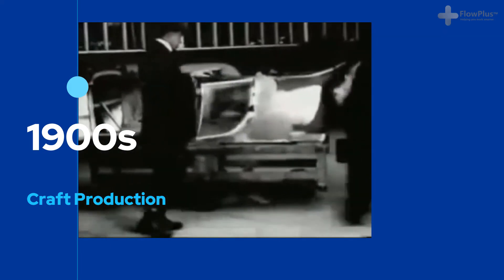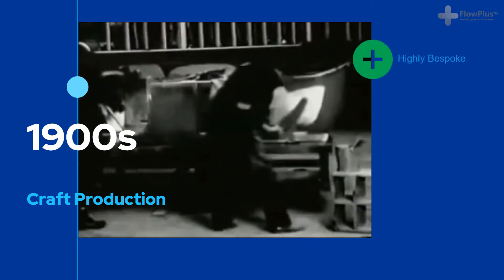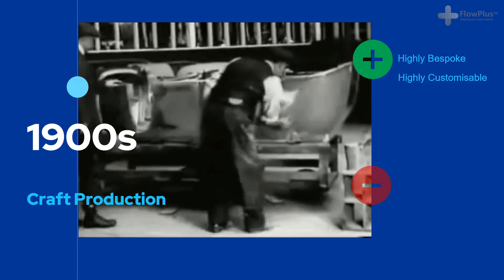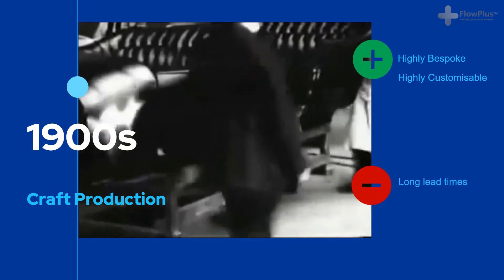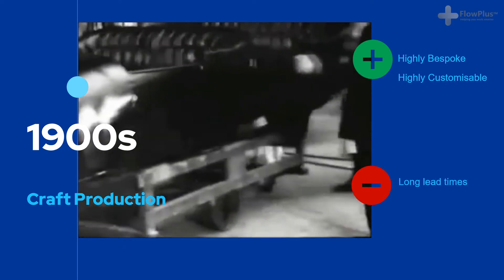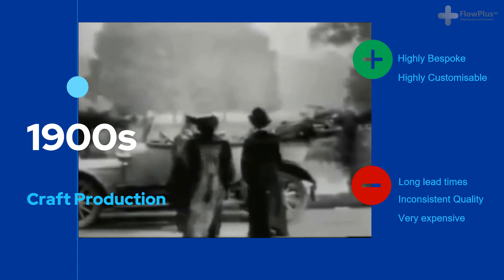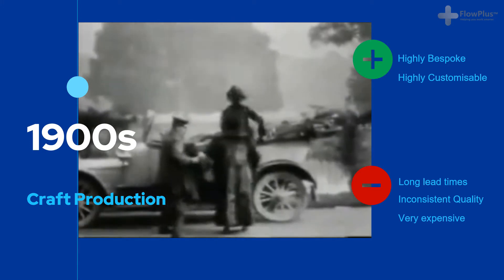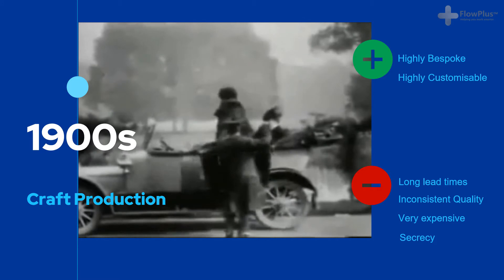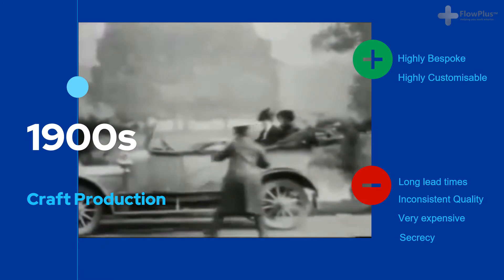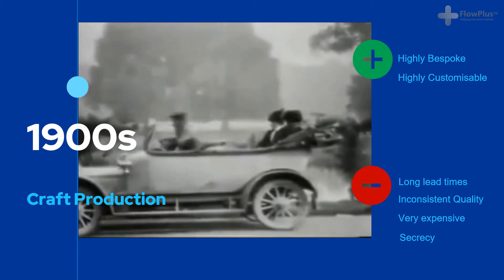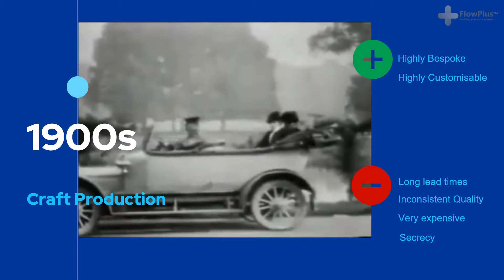Customers would be willing to wait a matter of months to have their car produced, followed by additional months of tweaking and adjustments. There were some positives: the cars were highly bespoke and customisable. The downsides were the long lead times — the time between making an order and receiving it — unpredictable quality as each car was made separately, and the cars were extremely expensive. As craftsmen worked in silos, there was secrecy in the way they worked. It soon became clear that there must be a better way of producing cars — a leaner, more efficient way.